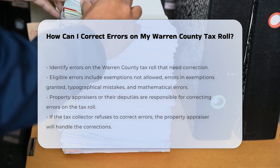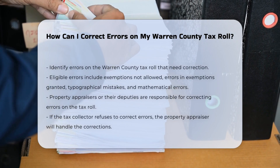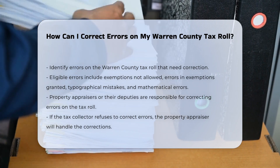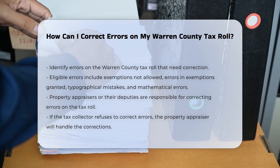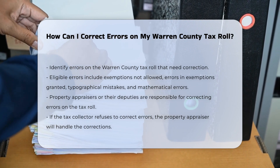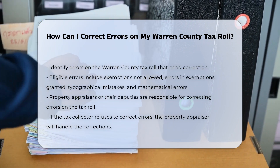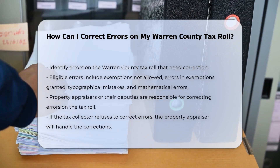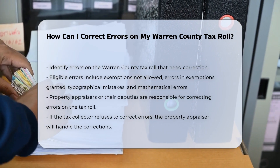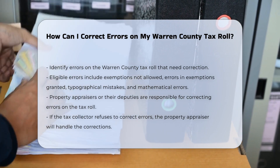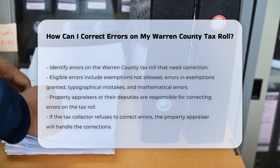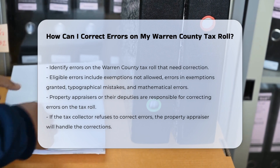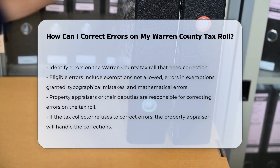If you've noticed an error on your Warren County tax roll, there are specific steps and procedures you need to follow to get it corrected. Identifying eligible errors: errors that can be corrected include failures to allow exemptions, exemptions granted in error, typographical or printing errors, errors in extending the amount of taxes due, taxes omitted from the tax roll, mathematical errors, errors in classification of property, and clerical errors, among others.